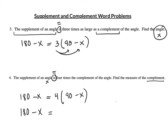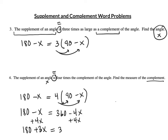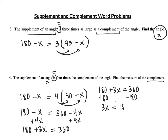180 minus x equals four times 90 minus 4x, which gives 360 minus 4x. There are variables on both sides. I'd rather add 4x to both sides to keep things positive. So this is 180 plus 3x equals 360. Now I'll subtract 180 from both sides, so 3x equals 180. Dividing both sides by 3, I get x equals 60.